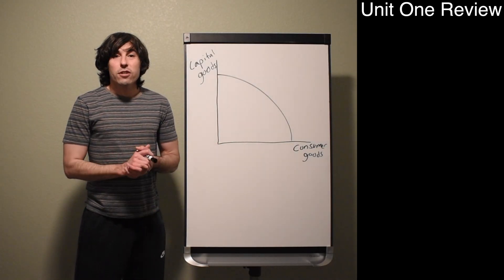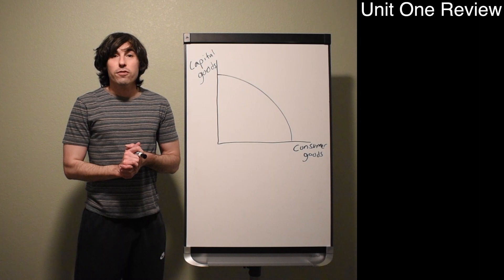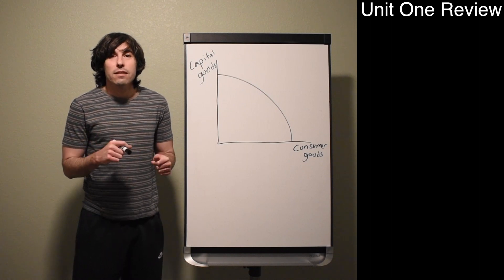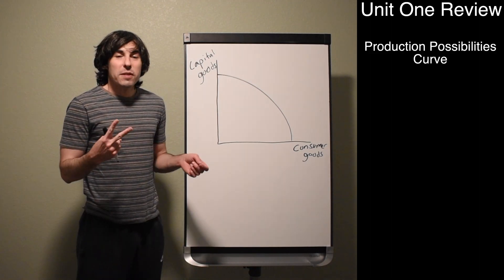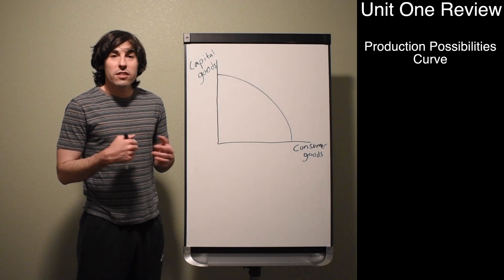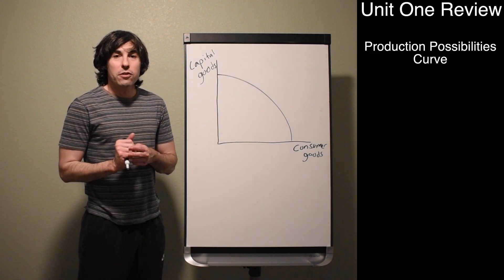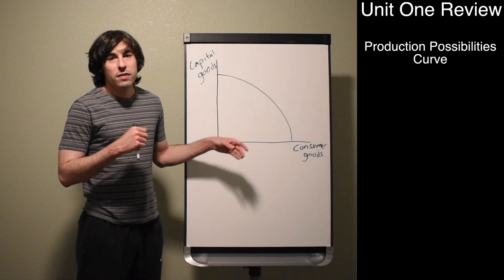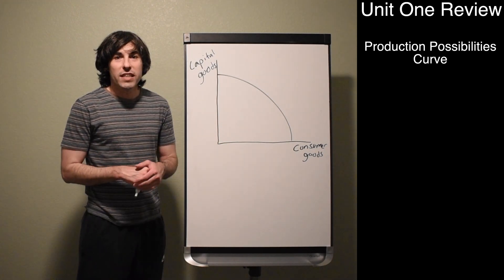Welcome back. Today we're going to do a quick review over unit one for the AP test coming up. There are basically two things that you need to worry about for unit one: the production possibility curve and comparative advantage.